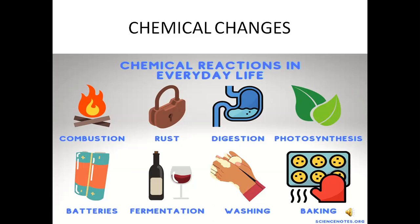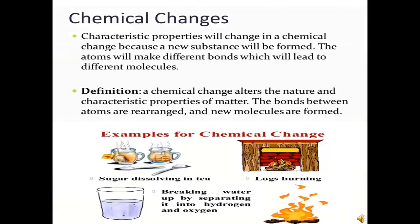Examples of chemical changes include rusting of iron, burning, curdling of milk, reaction of baking soda with lemon juice, and fermentation. Chemical changes are very important in our day-to-day life. All new substances used in various fields are produced as a result of chemical reactions — including combustion, rust, digestion, photosynthesis, batteries, fermentation, washing, and baking.